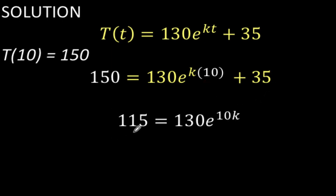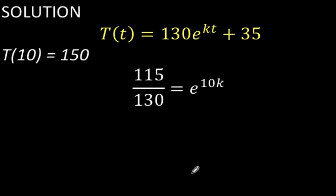Simplifying this equation, we subtract 35 from both sides to get 115, and multiply k times 10 to get 10k. Then dividing both sides by 130, we arrive at this result.